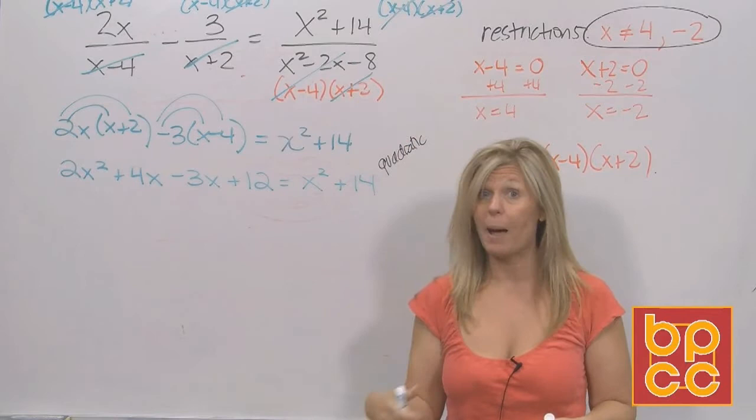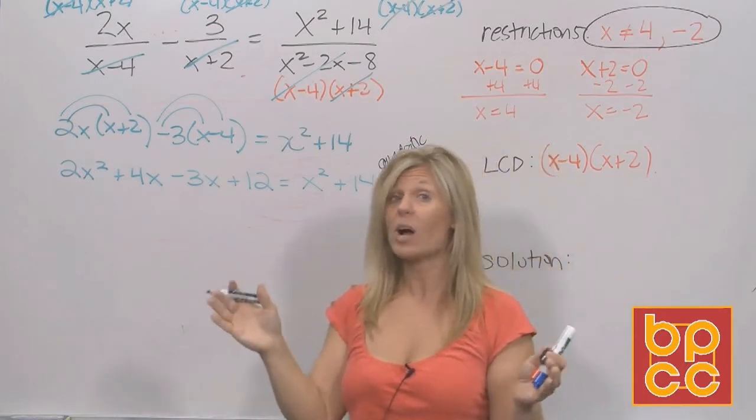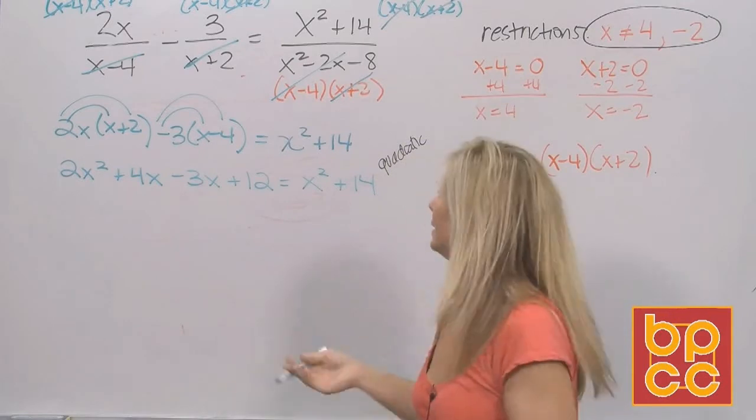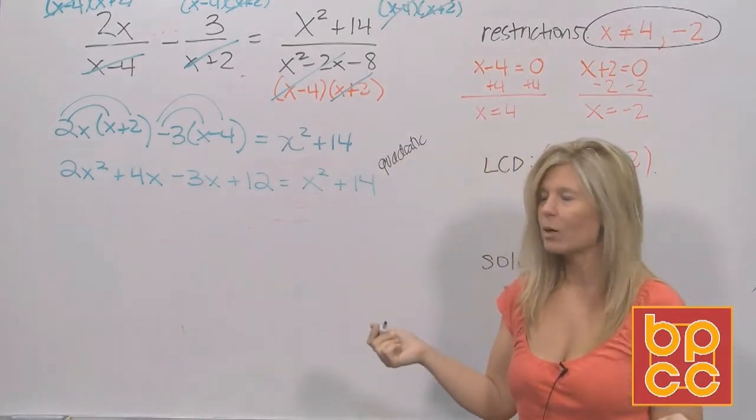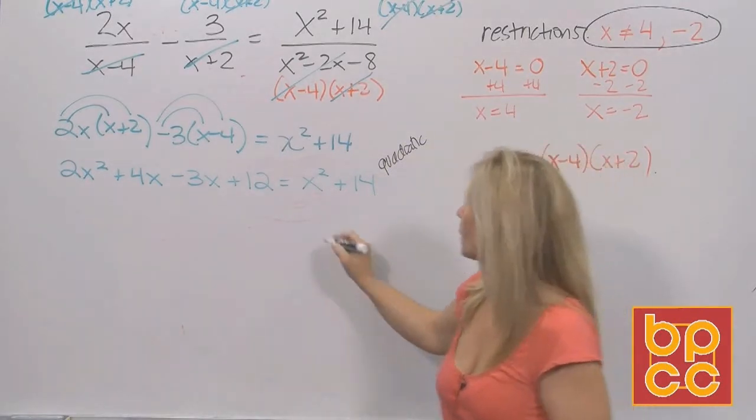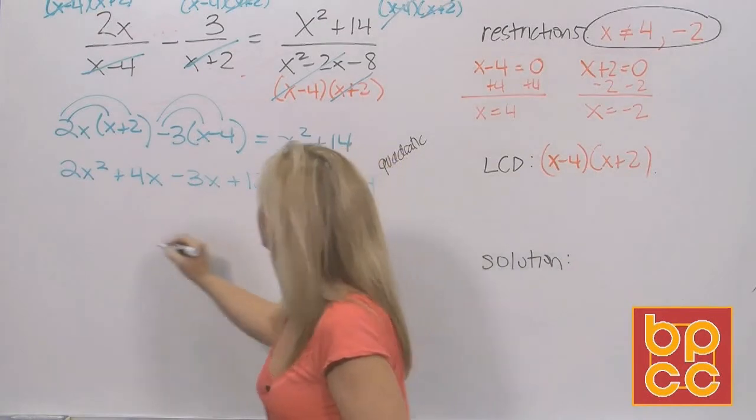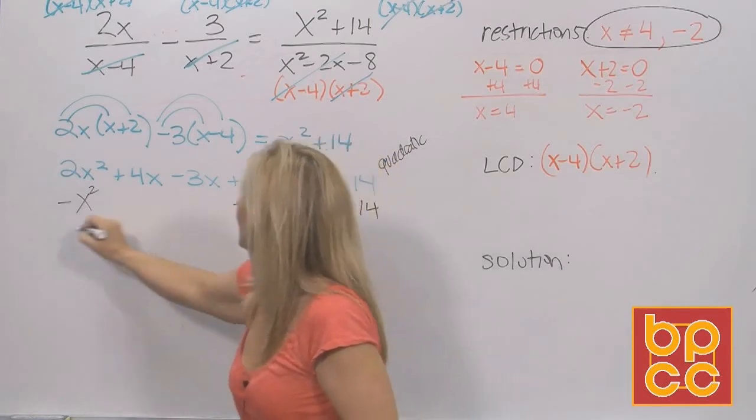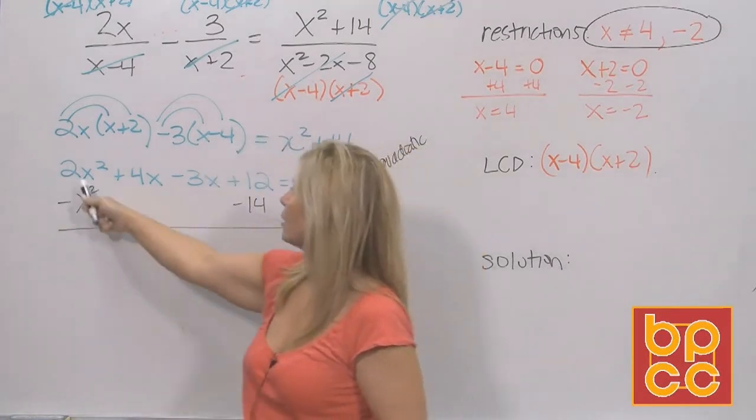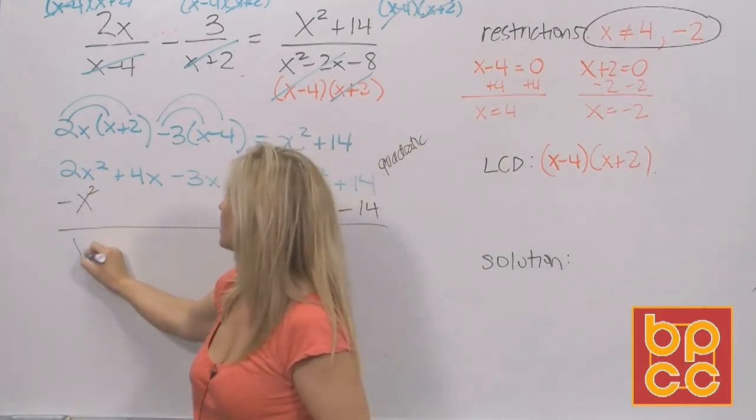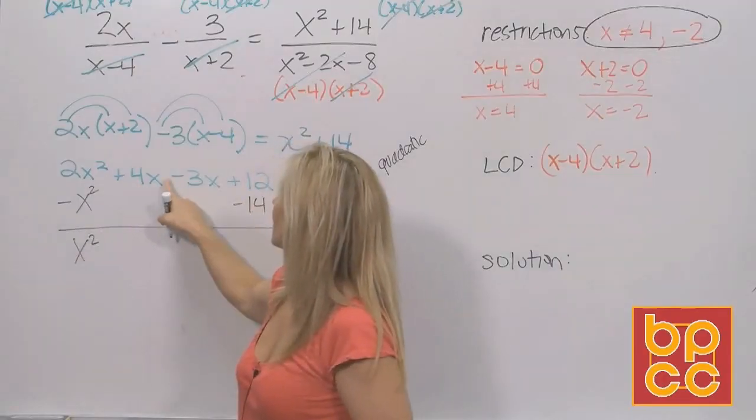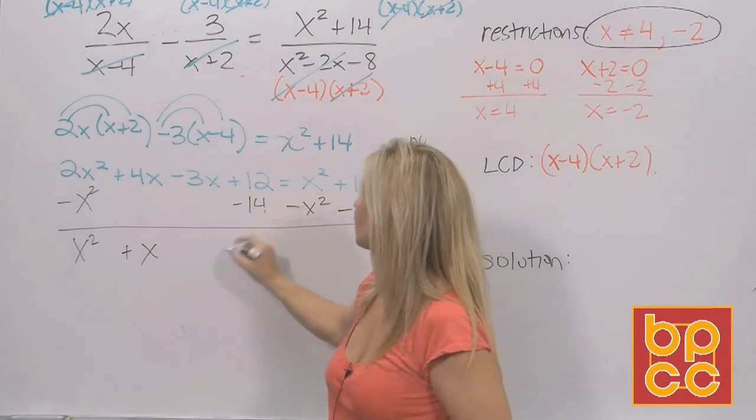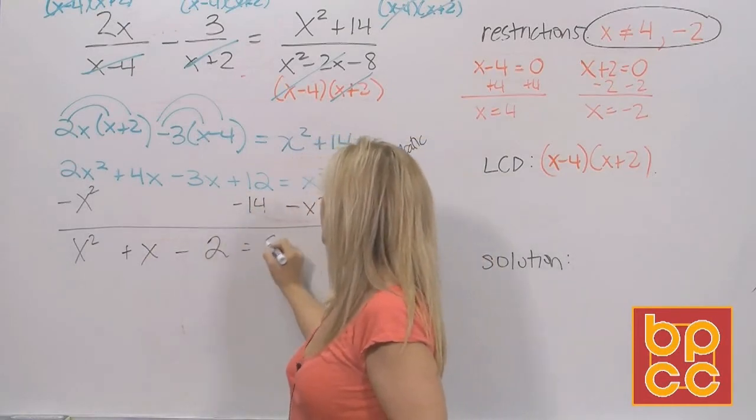Are you starting to get used to the pattern? We're taking some equation that looks ugly, and we're making it into a quadratic. Now, we want a quadratic. We want it set equal to 0. So you're right. I'm going to move the x squared by subtracting. I'm going to move the 14 by subtracting. And on the left side, 2x squared minus x squared is x squared. 4x minus 3x is 1x. 12 minus 14 is negative 2, equal to 0.